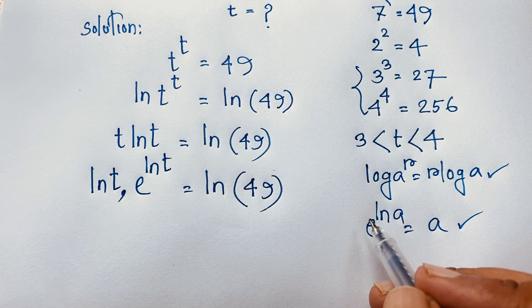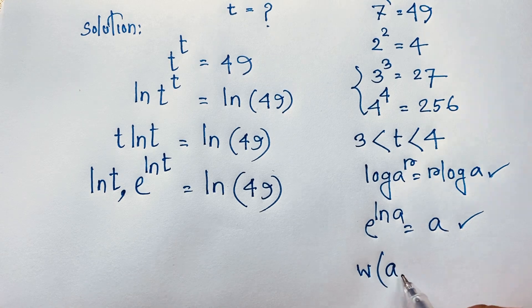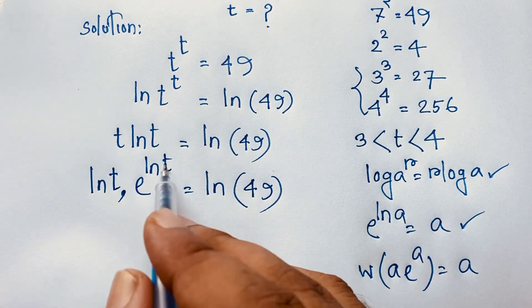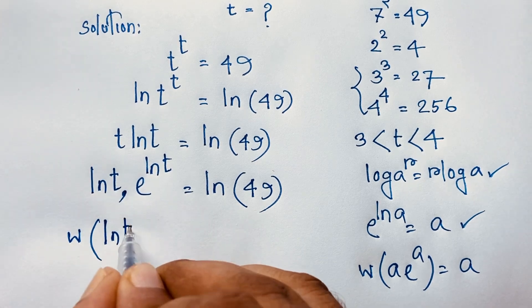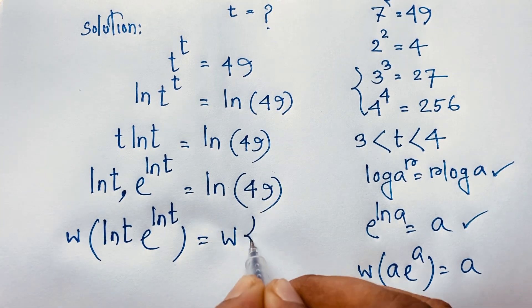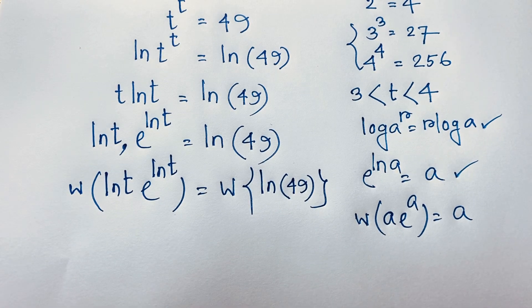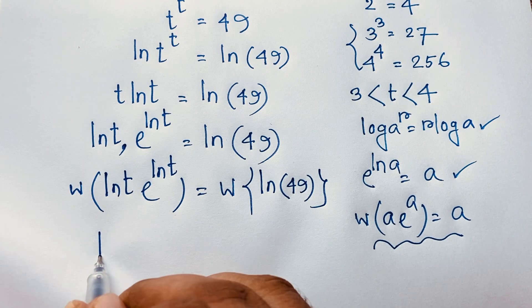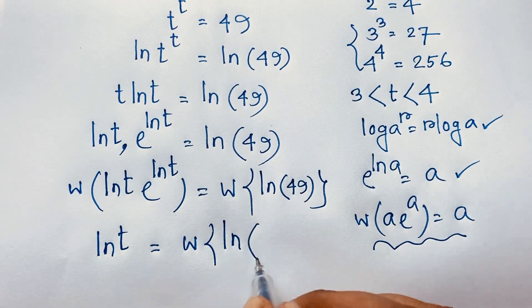You can see easily here: this is ln(t), this is ln(t), and this is e. We know the Lambert W function identity: W(a·e^a) = a. Applying this to both sides using the Lambert W function, we get: ln(t) is equal to W(ln 49).